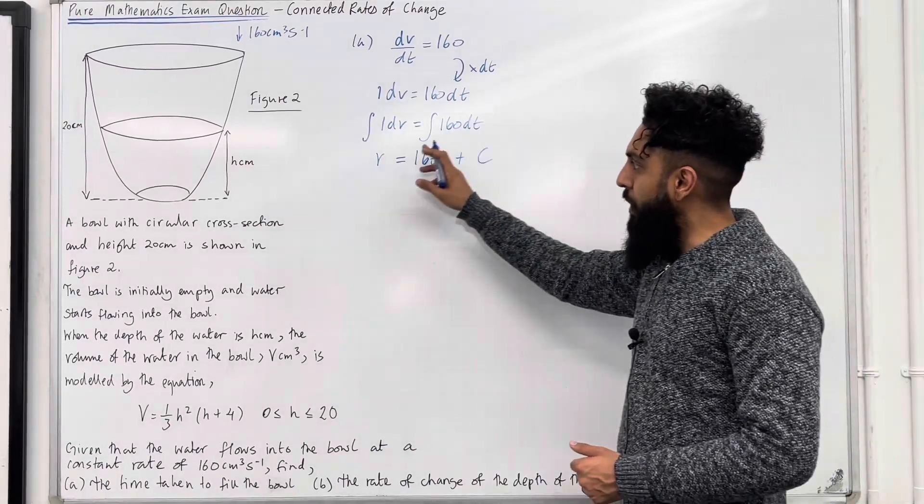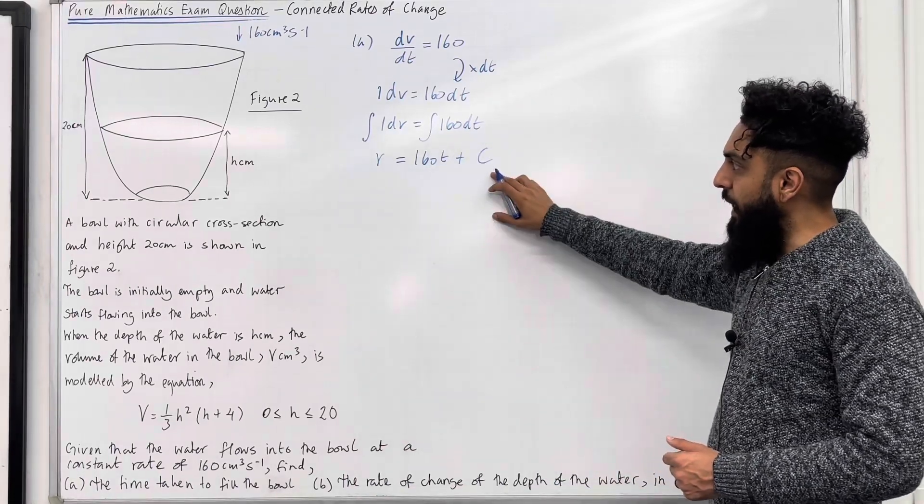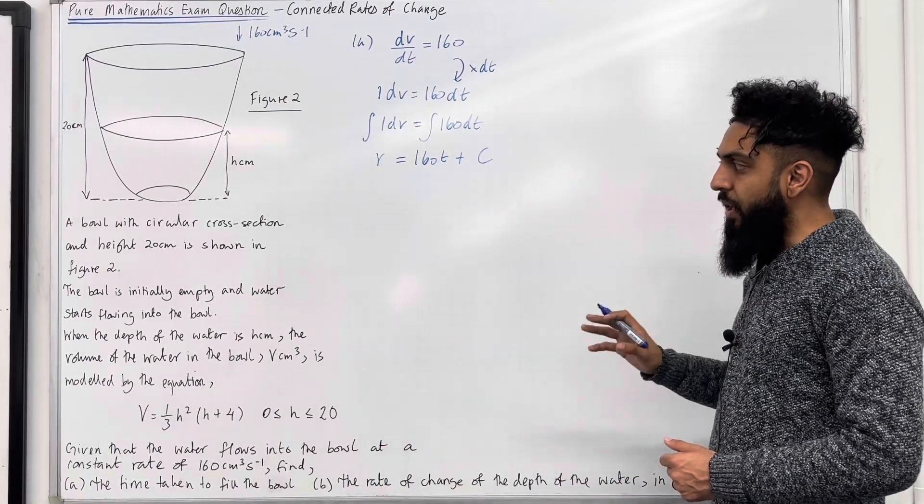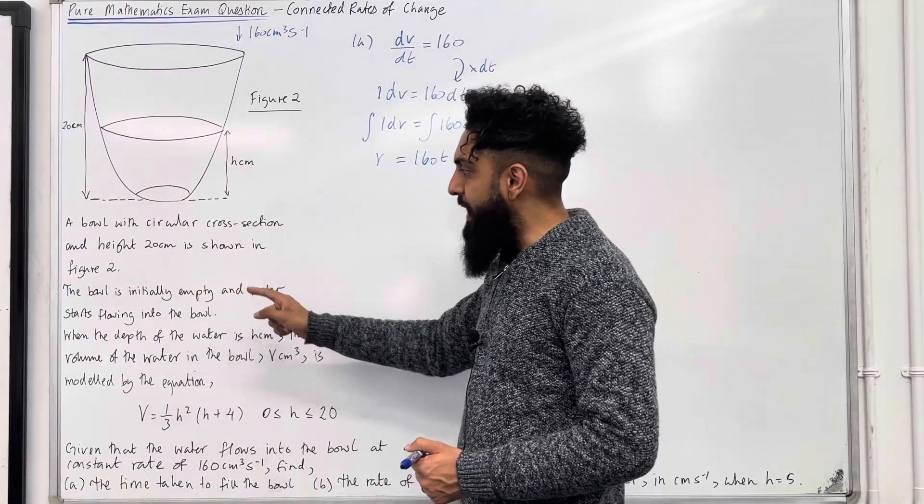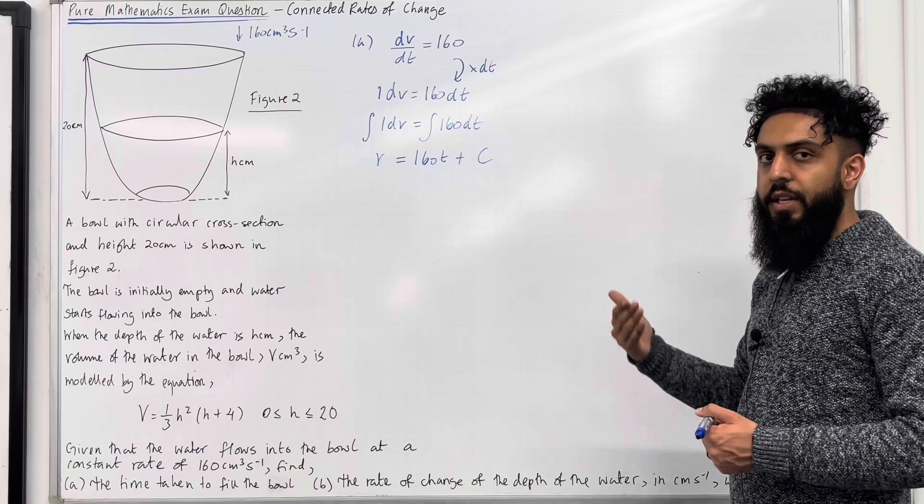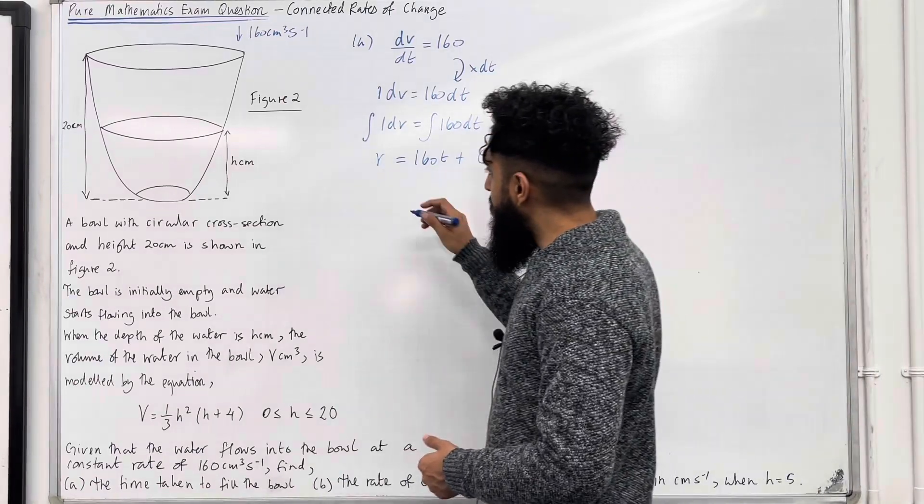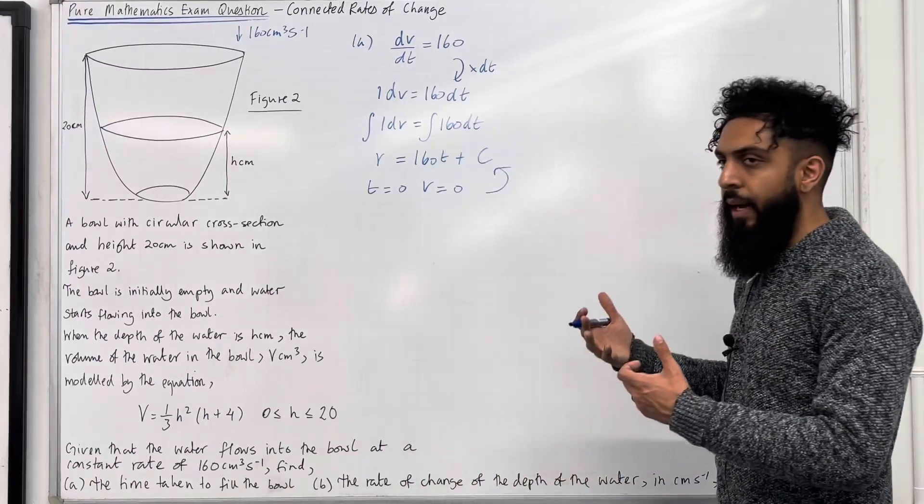That is my volume formula in terms of t and the constant c of integration. Now, we need to calculate c using a boundary condition written within the question. The bowl is initially empty. Initially means t equals 0 and if it's empty, the volume of water in the bowl is 0. So, we're going to substitute t equals 0 and v equals 0 into this formula to work out c.